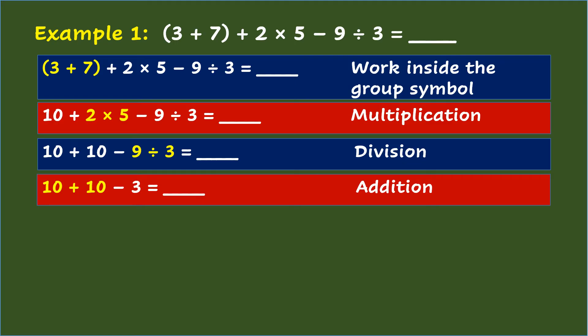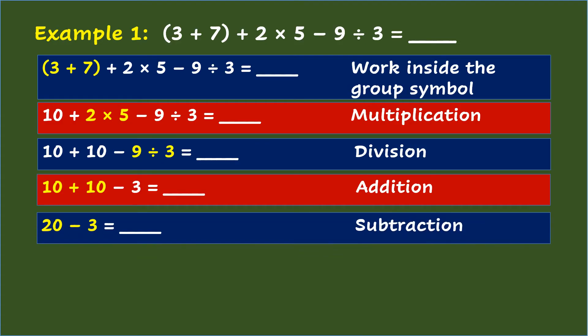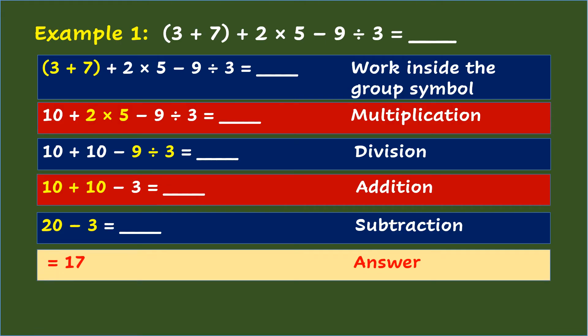Fourth is do the addition. So that's 10 plus 10 equals 20. Fifth step is do the subtraction. So that's 20 minus 3 and the answer is 17.